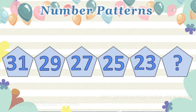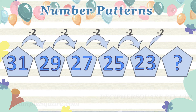In this example, the first number given is 31. And then each number is exactly 2 less than the previous number. So the next number in the pattern should be 23 minus 2, that is 21.